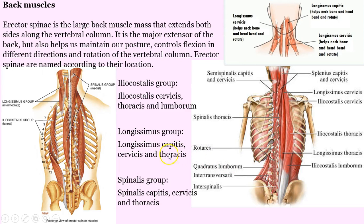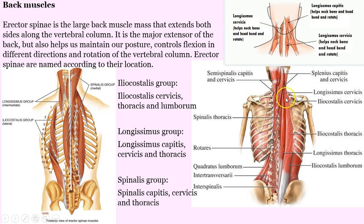Erector spinae — we started the lecture here. So here we have the 'I love spinach' concept: iliocostalis, longissimus, and spinalis. The iliocostalis has the cervicus, thoracis, and lumborum. They all have those same three regions — you just have to apply the prefixes. Iliocostalis, longissimus, and spinalis is going to be near the midline of the back, on the posterior surface.